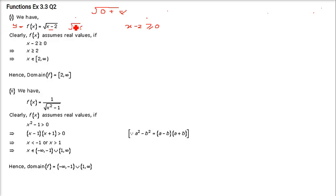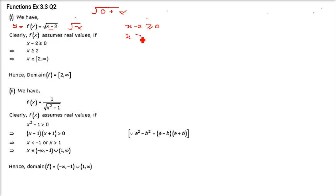Right now, we just understand that we don't require a negative — that will make things difficult and the result will be indeterminate; we cannot define it. So there is no possibility of this under root having a negative value. But it can have a 0, that's why we have the greater than or equal to sign. It can be 0 or greater than 0. So x should be greater than or equal to 2.